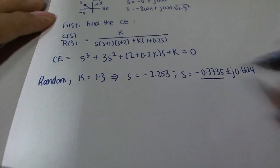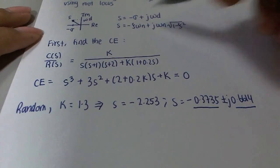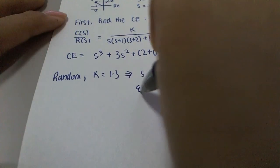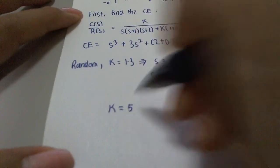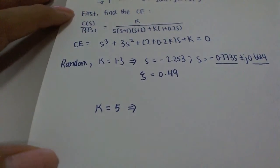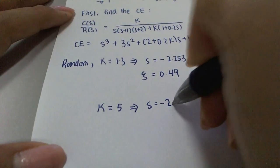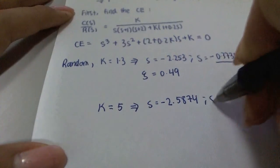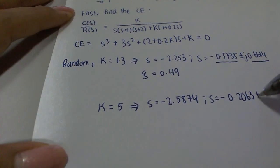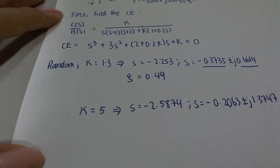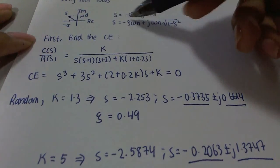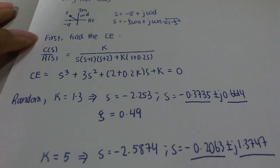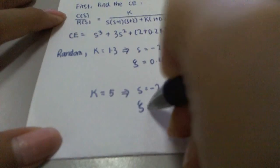Using those roots, I equate them with zeta·omega_n and omega_n·sqrt(1 minus zeta squared) and solve for zeta, giving zeta = 0.49. Next, for k = 5, substituting into the characteristic equation gives s = −2.5874 and s = −0.2063 ± j·1.3747. Using these two values in the same simultaneous equations, we get zeta = 0.15.